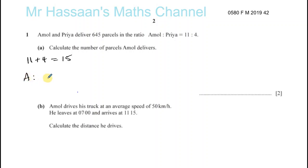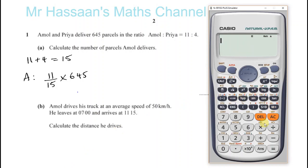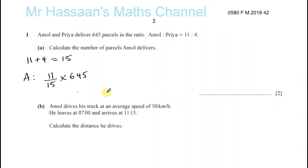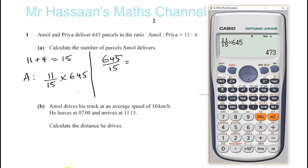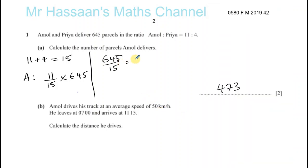So Amol has delivered 11 out of 15 parts of 645. You do 11 over 15 times 645, and that gives you 473 parcels — that's how much Amol delivered. Alternatively, you could say there are 15 parts altogether and each part is worth 645 divided by 15, which gives you 43. Then 11 times 43 also gives you 473.